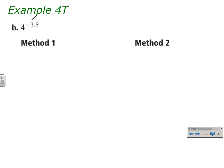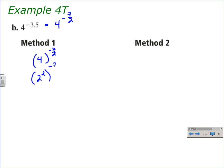In this example, before we simplify, we need to convert the decimal exponent into a fraction. That gives us four to the negative three and one-half, which is negative seven halves, so we want to evaluate four to the negative seven halves power. I prefer method one: think of what number raised to the second power gives four — that's two — so we write two to the second power raised to the negative seven halves power, and we multiply those two powers to get two to the two times negative seven halves power.